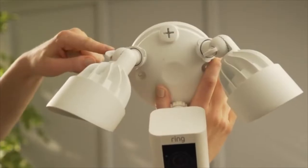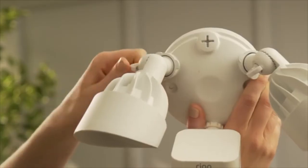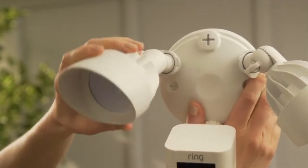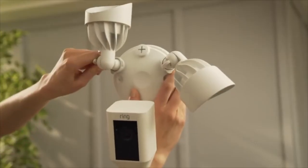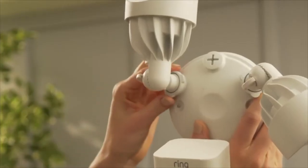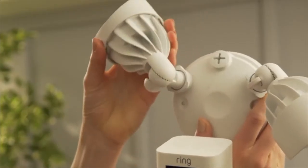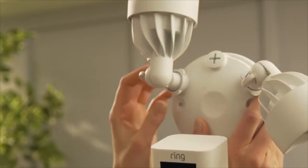To get started, loosen these knobs to point the lights straight up to get them out of the way during installation. You can also use this lock collar at the base of each light to rotate it in the desired direction and secure it later.